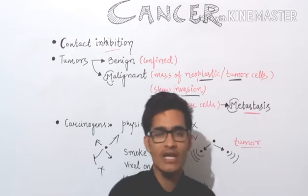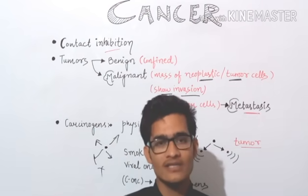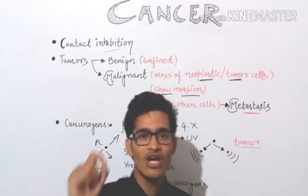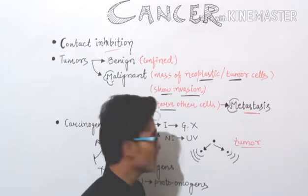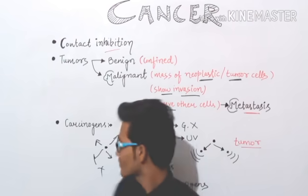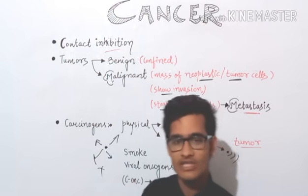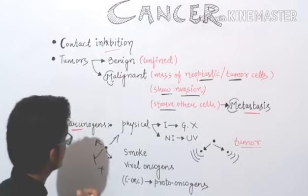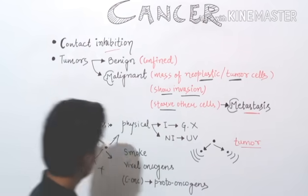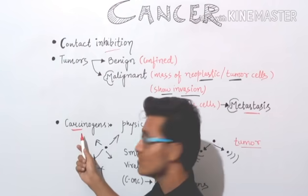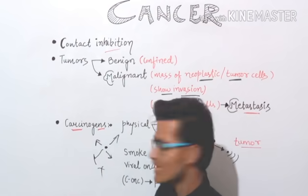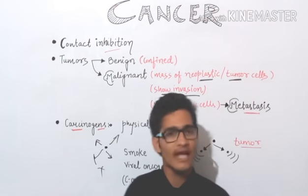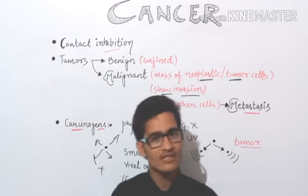Malignant tumor will not let the normal cells eat well. There are some sort of cancer-causing agents. There are so many things — cancer-causing agents are known as carcinogens. Carcinogen: 'carcino' simply means cancer and 'gen' means generation. It means these are cancer-generating or cancer-forming agents.